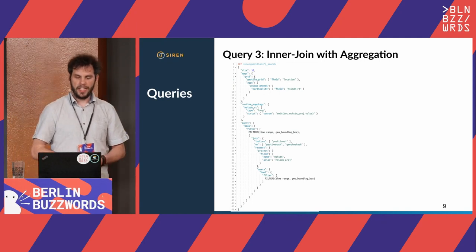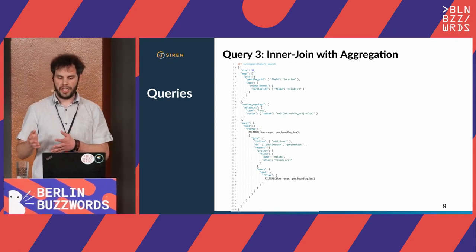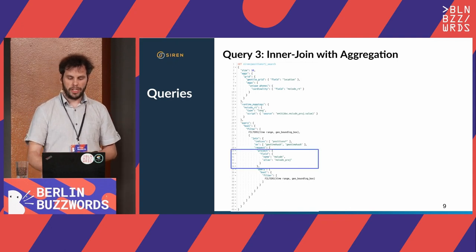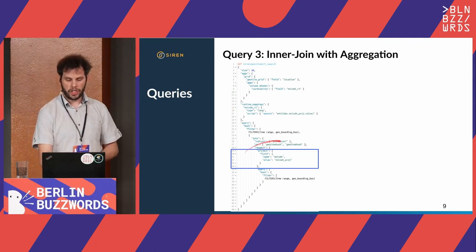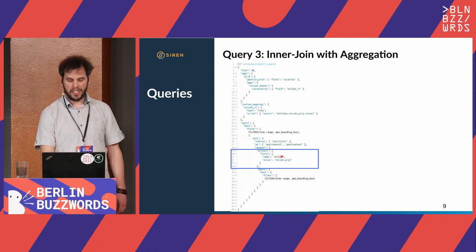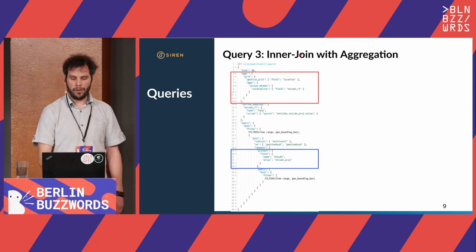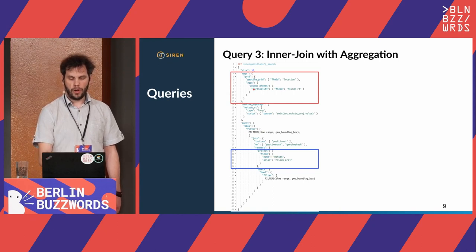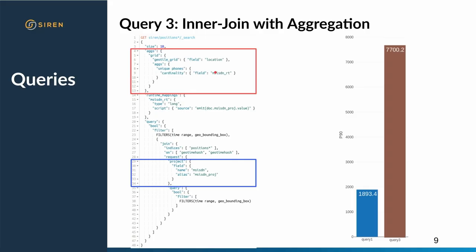The next query is an inner join coupled with an aggregation. With SAR Infederate, it is possible to get information from the child index by projecting a field from it using the project query clause on the child search — for example, projecting the MSISDN field. That projected field is made available on the parent context, so you can create an aggregation that counts the unique values of the projected MSISDN field. That request took much longer — 7.7 seconds — due to the computation of the inner join itself, specifically the costly Cartesian product between the parent search and the child search.